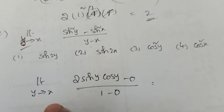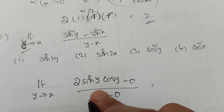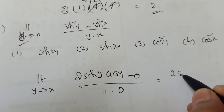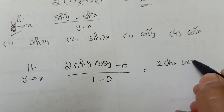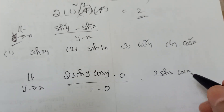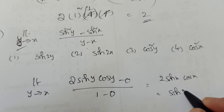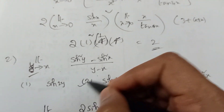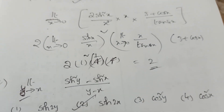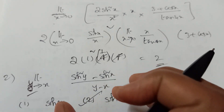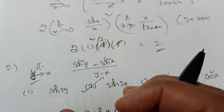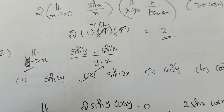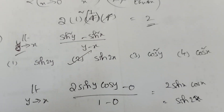Now apply the limit: substitute y = x. We get 2sinx·cosx, which equals sin2x. So the answer is sin2x — option 2. It looks difficult but you can solve it in 30 seconds.